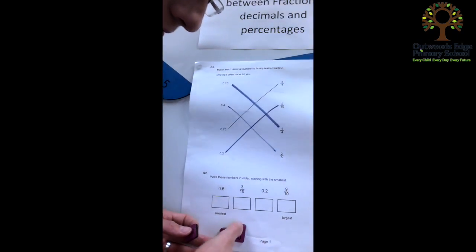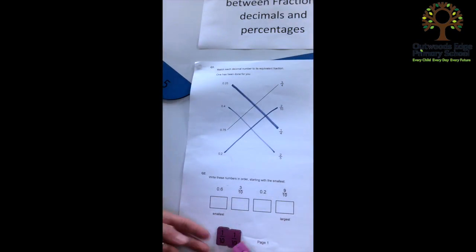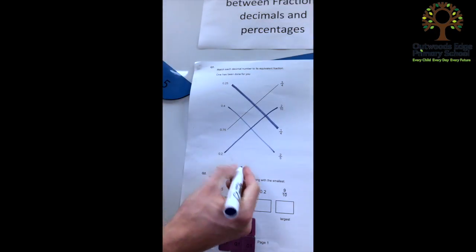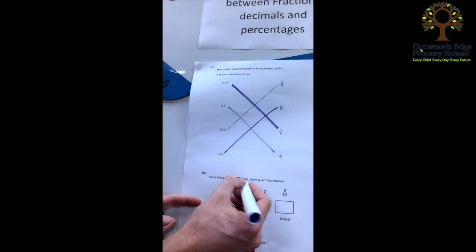The children hopefully can see from this model that 3 tenths is equivalent to 0.1, 0.2, 0.3. So if I change that on the sheet to 0.3, I'll write it above it to remind me.